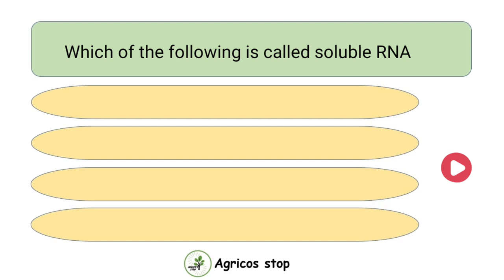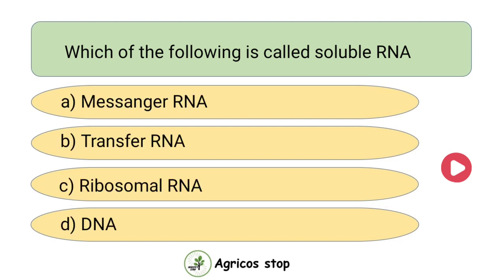Which of the following is called as soluble RNA? Options are messenger RNA, transfer RNA, ribosomal RNA, and DNA. The answer is transfer RNA. Transfer RNA or tRNA is called as soluble RNA or sRNA.